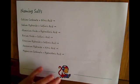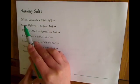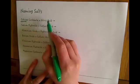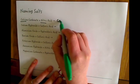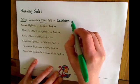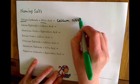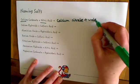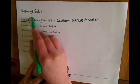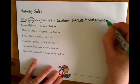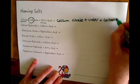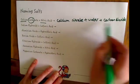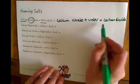So let's see how you've got on. Calcium carbonate plus nitric acid would make calcium nitrate plus water plus, because of this bit, carbon dioxide. Now it doesn't matter which way around you've got these three products as long as they're all there.